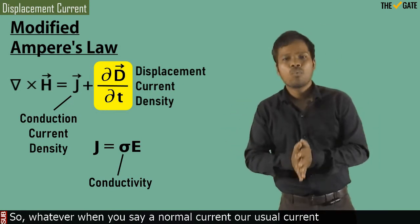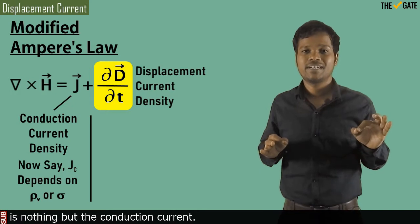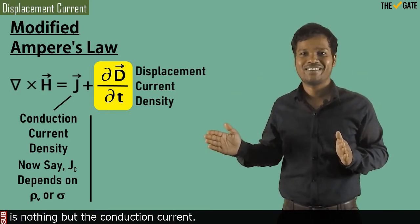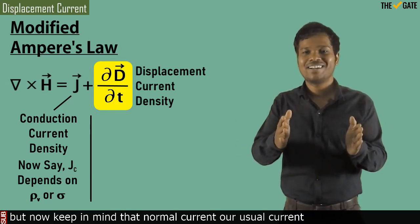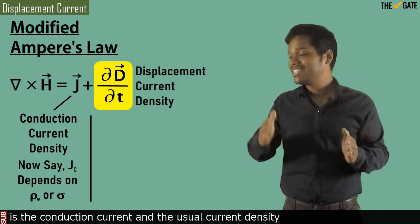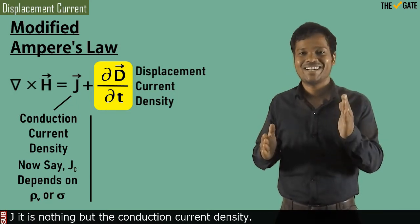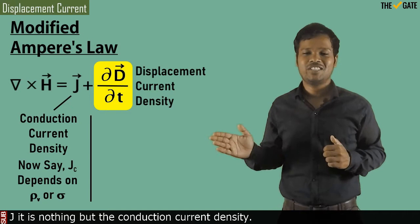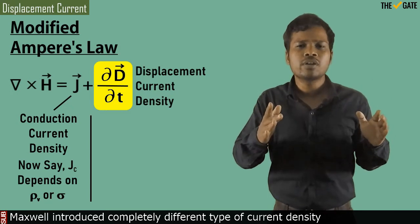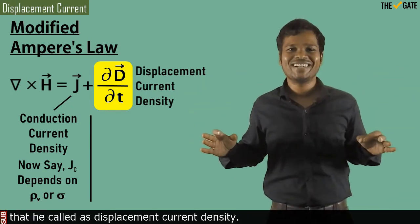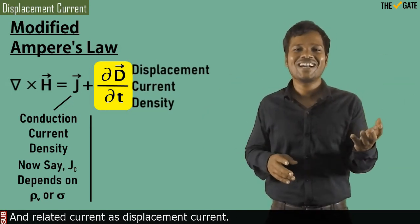From this expression J = σE, you can easily understand why our usual current density should be called conduction current density — it depends on sigma, the conductivity. So when you say normal current, our usual current is nothing but the conduction current. Most of the time we do not use the word conduction, but keep in mind that the usual current density J is nothing but the conduction current density JC. Now, while modifying Ampere's law, Maxwell introduced a completely different type of current density, which he called displacement current density, and the related current as displacement current.